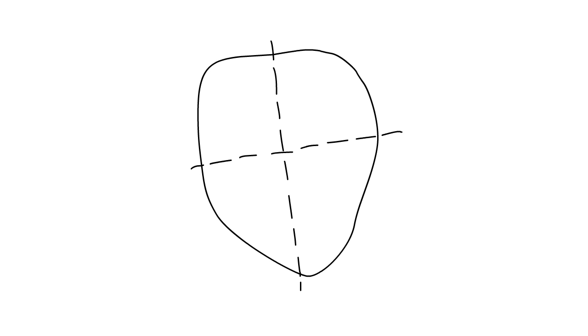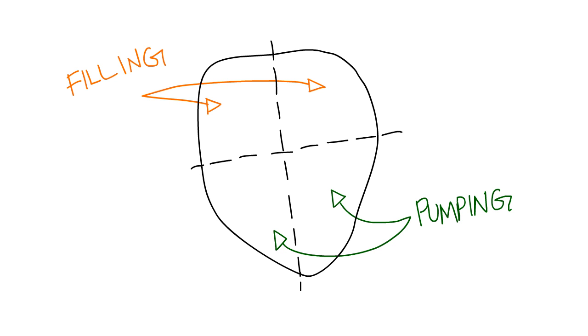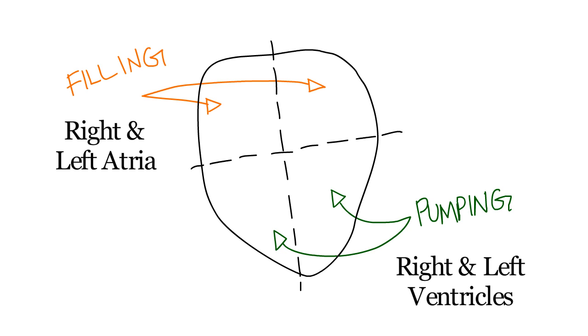Altogether the heart has four chambers, two filling chambers and two pumping chambers. The medical terms for the filling chambers are the right and left atria, and the medical terms for the pumping chambers are the right and left ventricles.